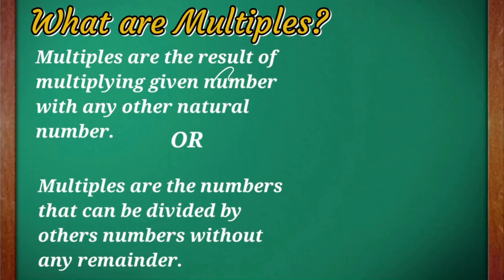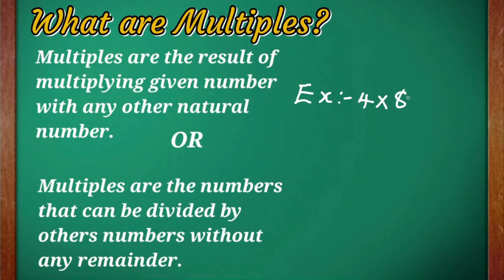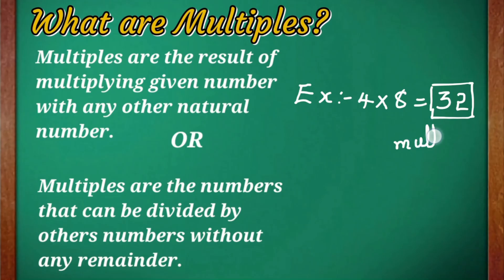Of that number. For example, if the number given is 4 and we multiply it with any natural number, let us multiply it with 8 — you get 32 as the result. 4 times 8 is 32, so 32 here is the multiple of 4.